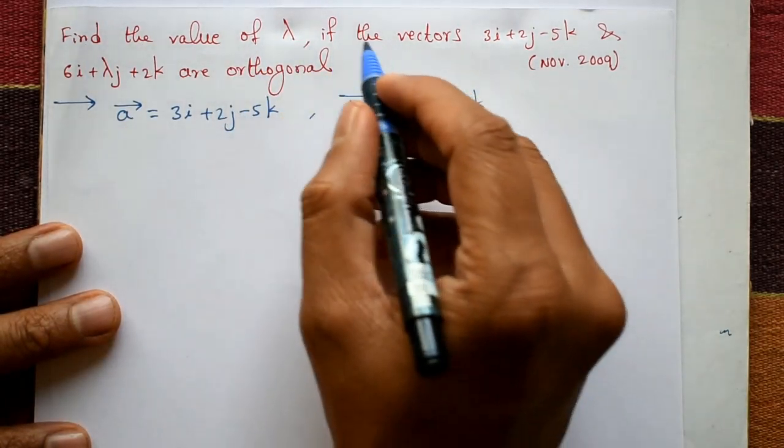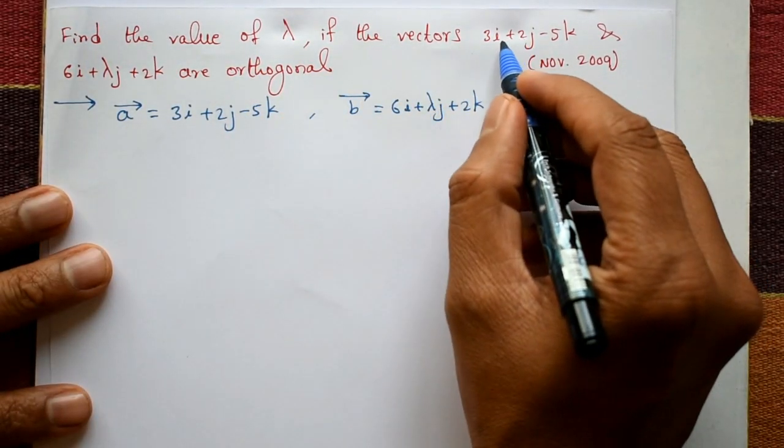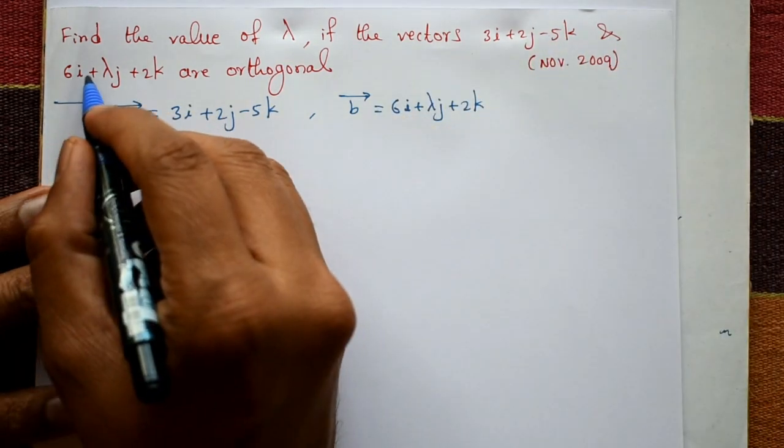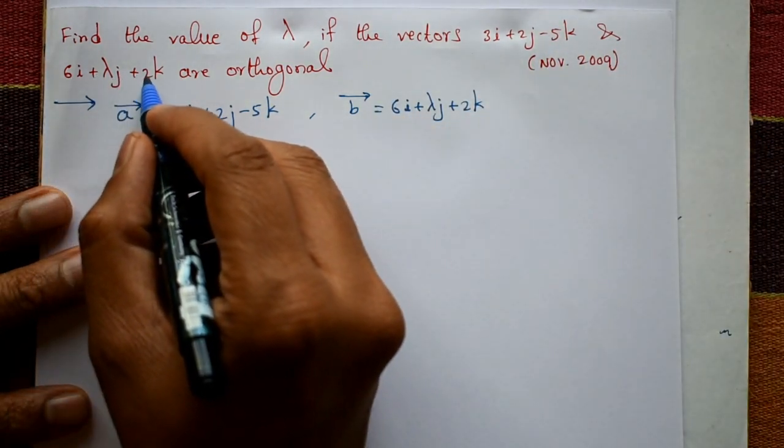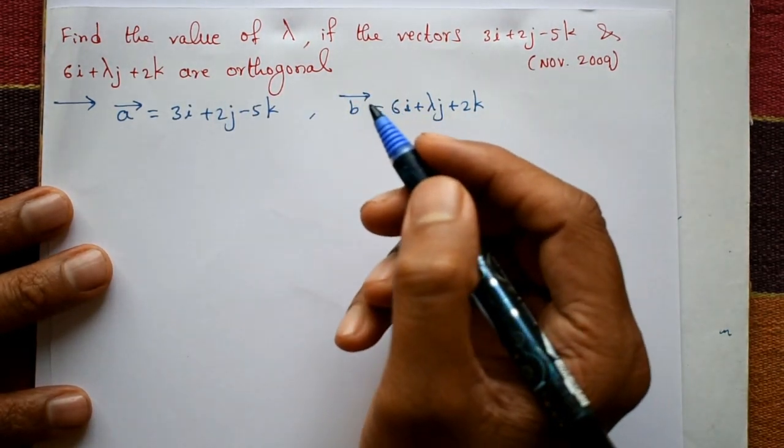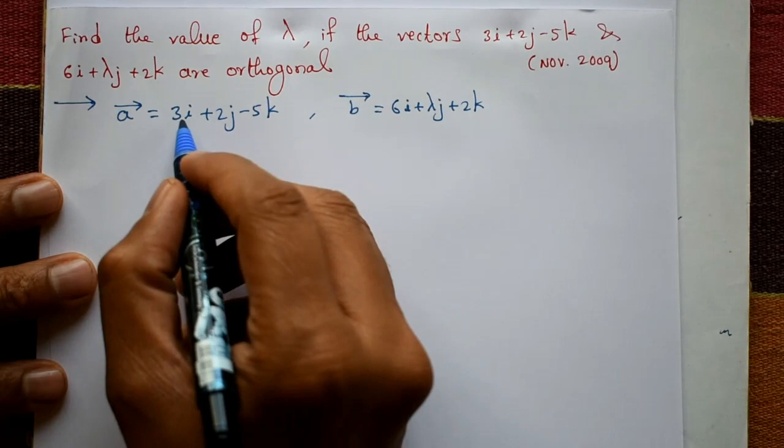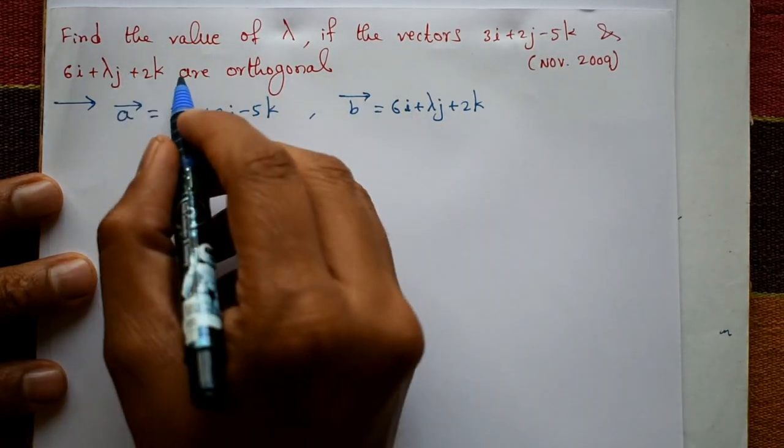Find the value of lambda if the vectors 3i plus 2j minus 5k and 6i plus lambda j plus 2k are orthogonal. Okay, now for the solution: the first one is vector a, the second one is vector b.